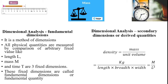L into L into L gives L cubed. So this derived quantity can be expressed as M divided by L cubed, which can also be written as M into L power minus 3. Likewise, secondary dimensions can be expressed from fundamental dimensions — mass and length.